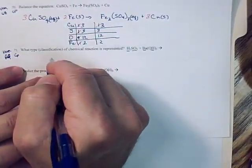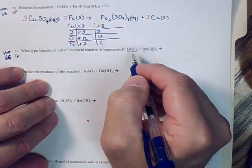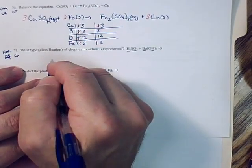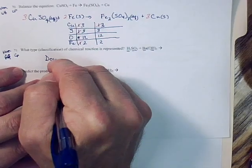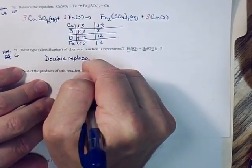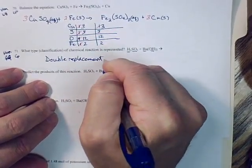All right. So let's go and classify this then. And if we have two two-part chemicals, if a reaction is going to take place, this has to be a double replacement reaction.